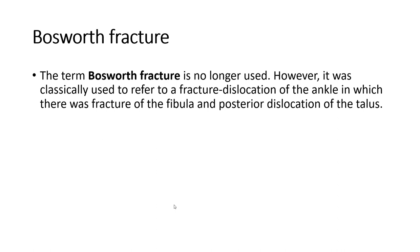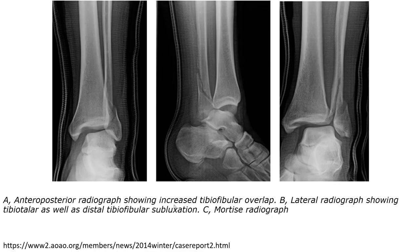The term Bosworth fracture is no longer used. It was previously used to refer to a fracture dislocation of the ankle in which there was fracture of the fibula and posterior dislocation of the talus, which is an example of the Bosworth fracture.